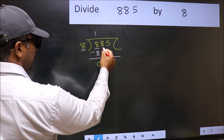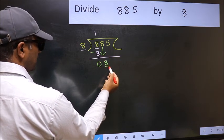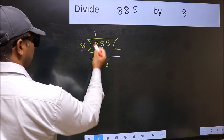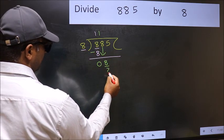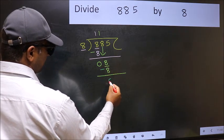After this, bring down the beside number. So, 8 down. 8. When do we get 8 in 8 table? 8 once, 8. Now you should subtract. 8 minus 8, 0.